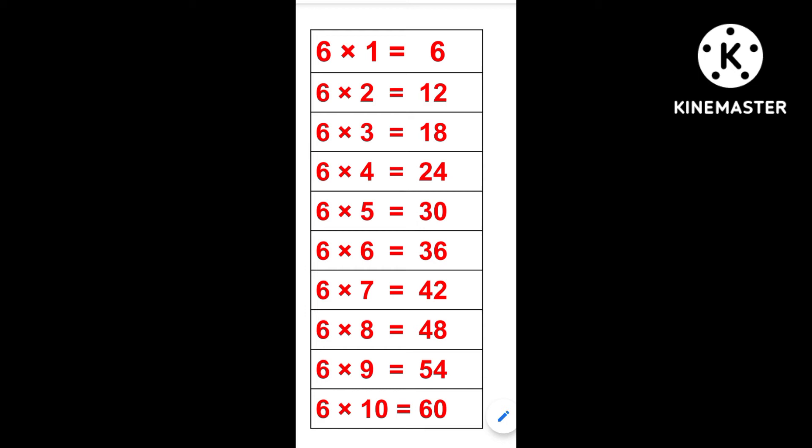6 twos are 12. 6 threes are 18. 6 fours are 24. 6 fives are 30. 6 sixes are 36.